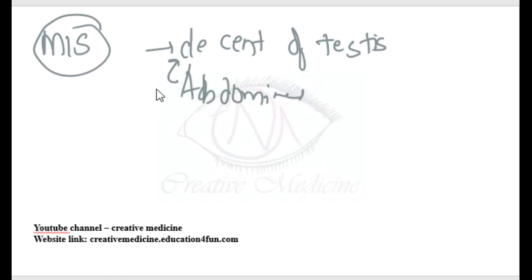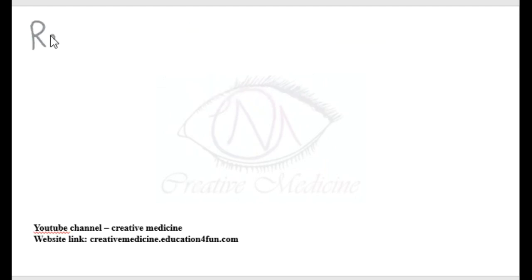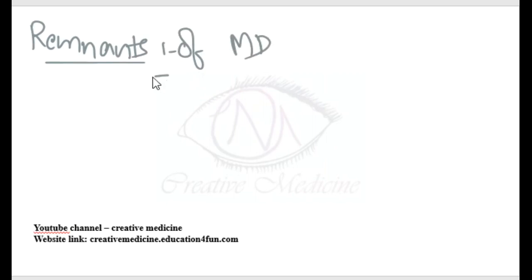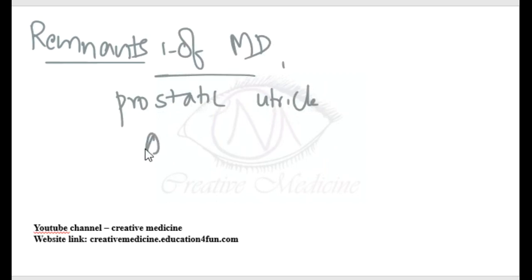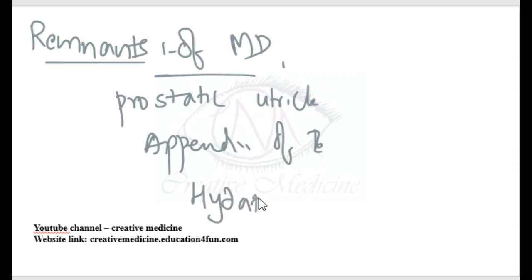The Müllerian duct is regressed in males. The remnants of the Müllerian duct include the prostatic utricle and the appendix of testis, also known as the hydatid of Morgagni.